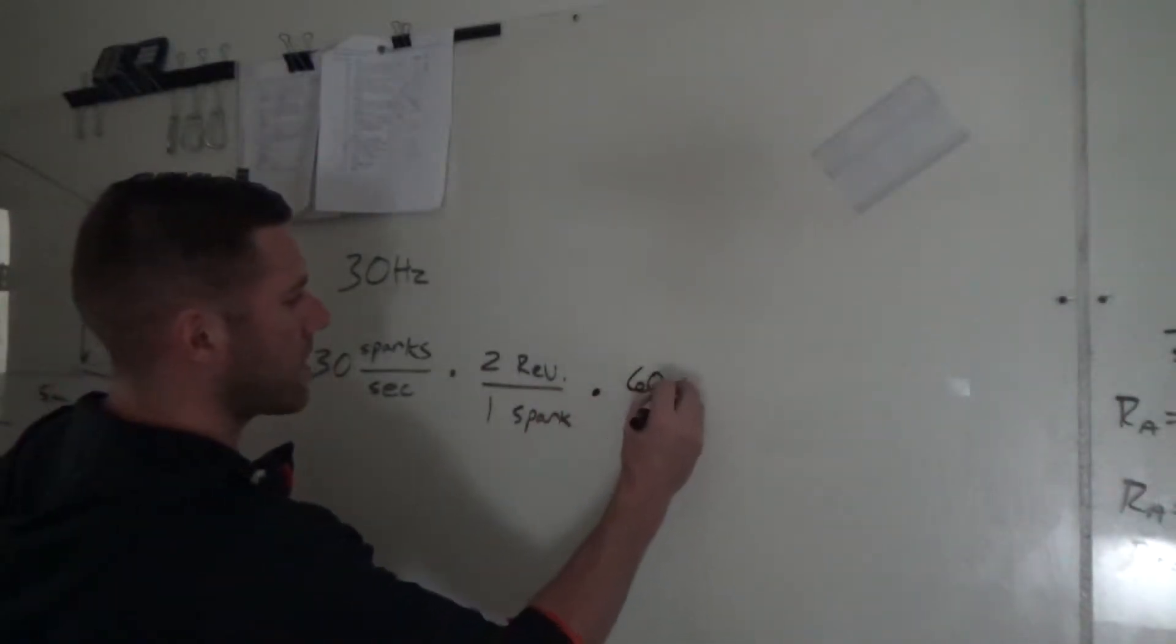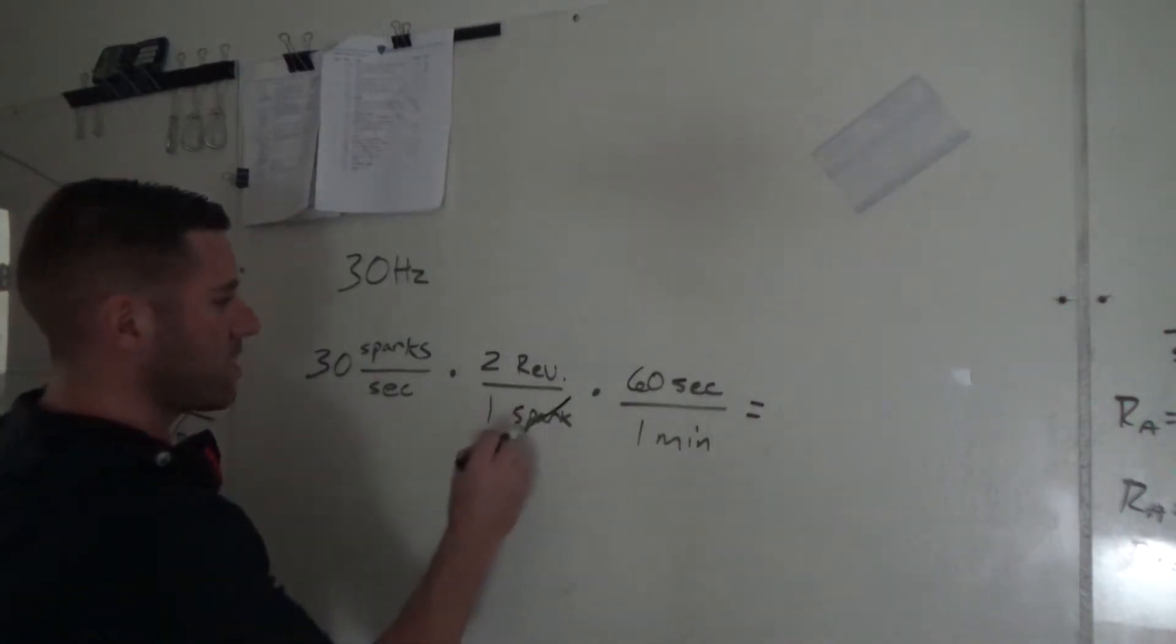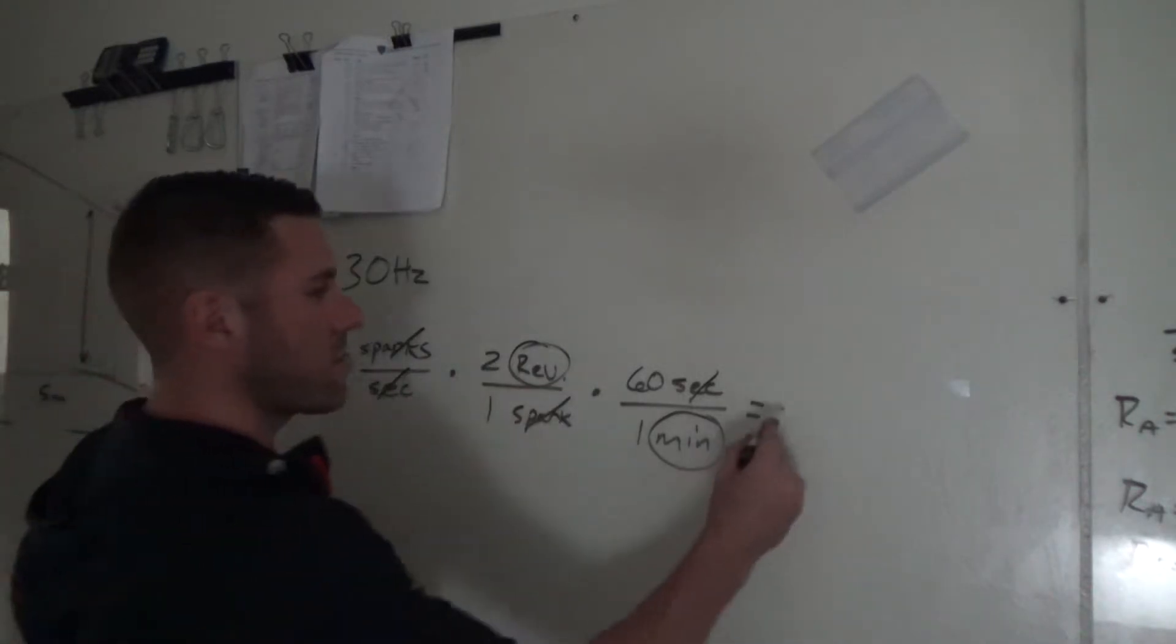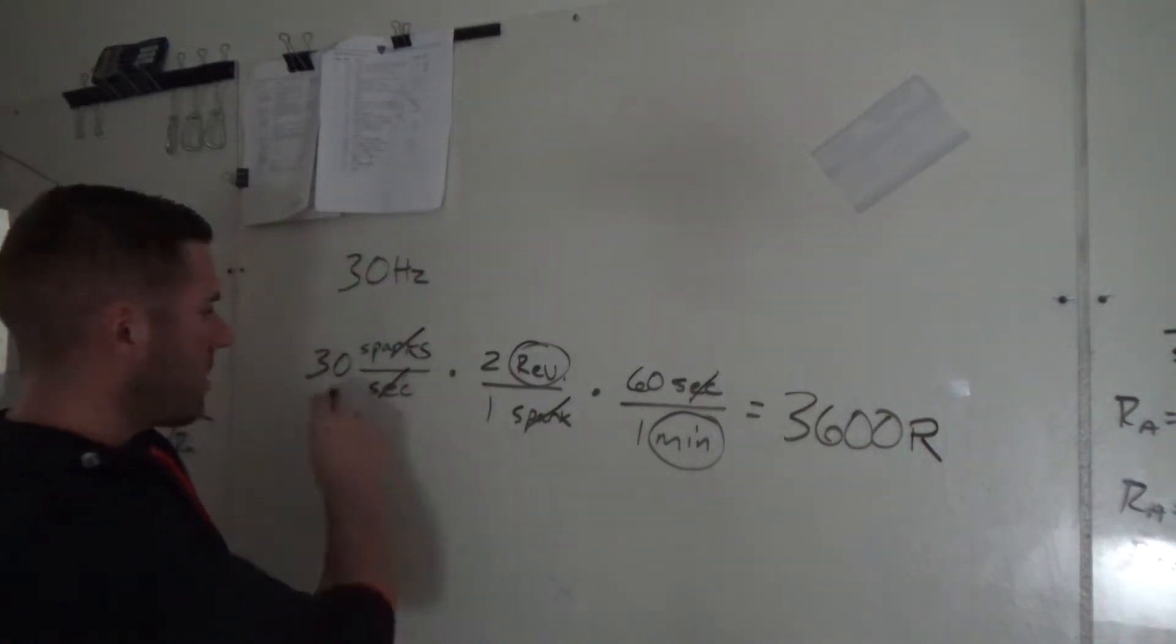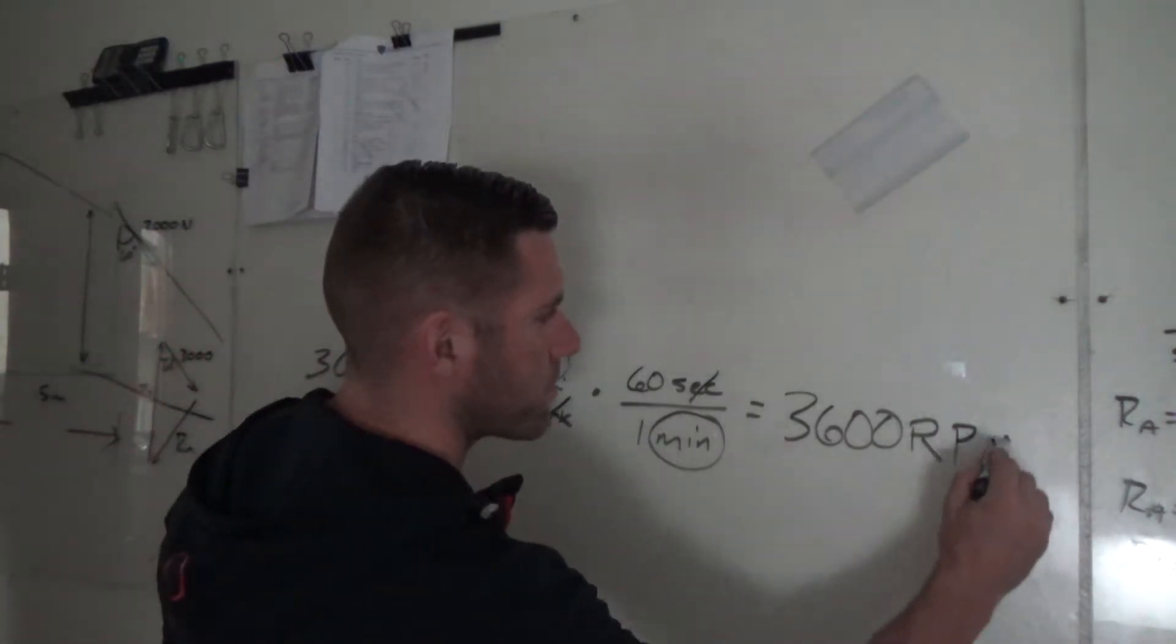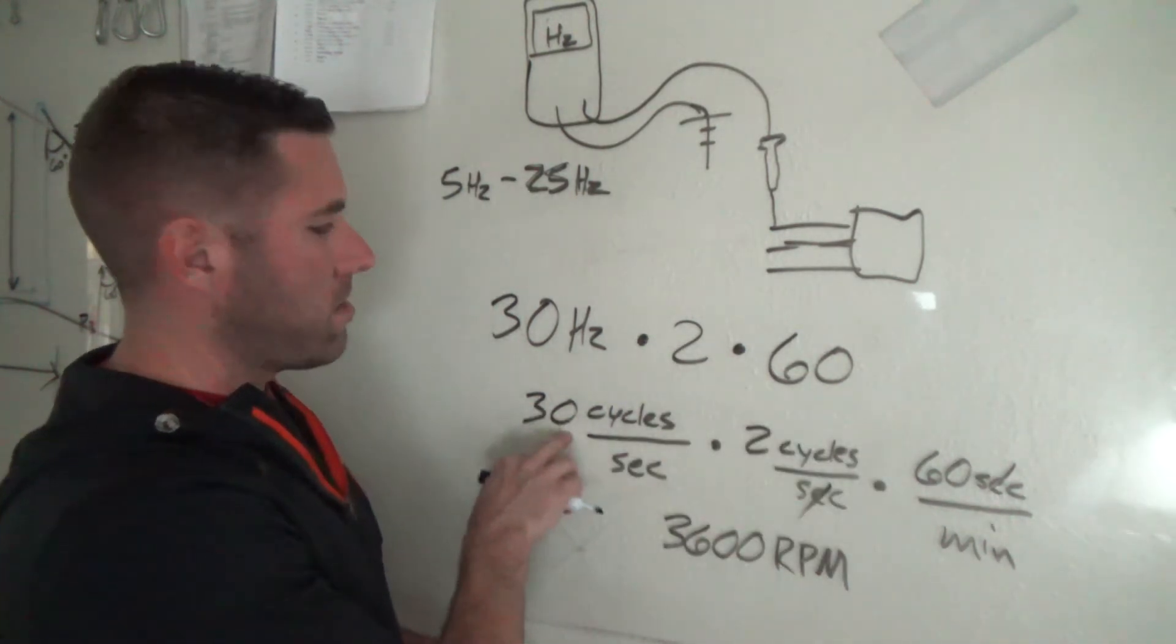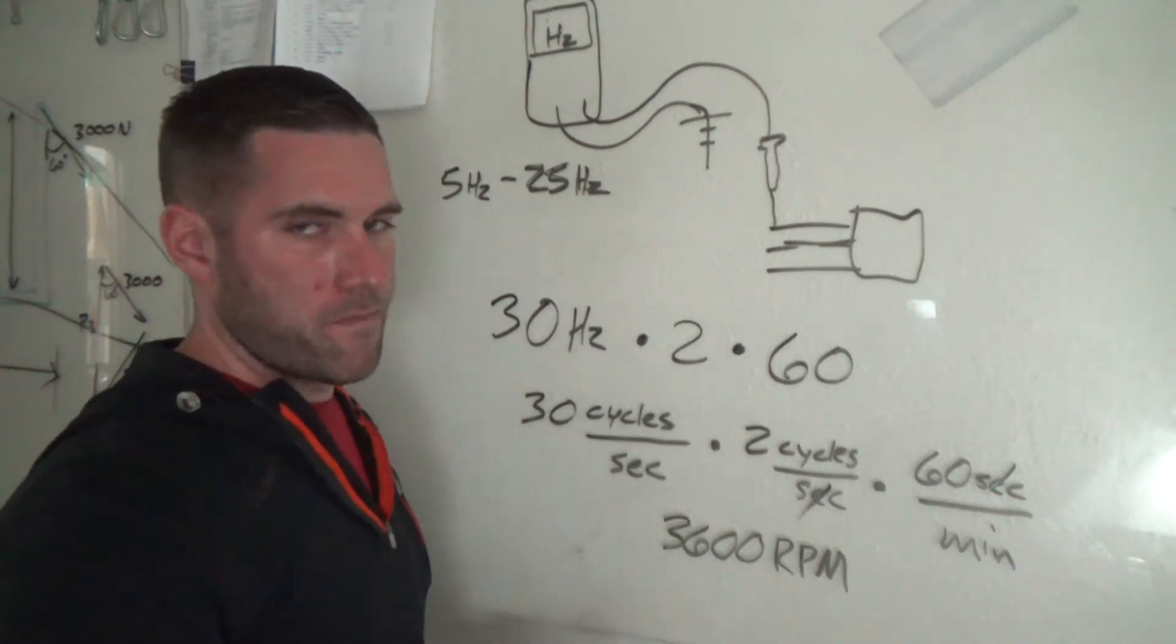Then we got our time, which is 60 seconds in one minute. What that all comes out to cancel out to is we cancel out the sparks, we cancel out the seconds, and the only thing we're left with is this. 30 times two is 60 times 60 equals 3600. What are we left with at the top? Revolutions per being divided by what do we have at the bottom? Minutes. We end up with 3600 RPM. That is accounting for the gaps between firing and it's also accounting for how many are hitting per minute. So now we're at cycles per minute, revolutions per minute, RPM.